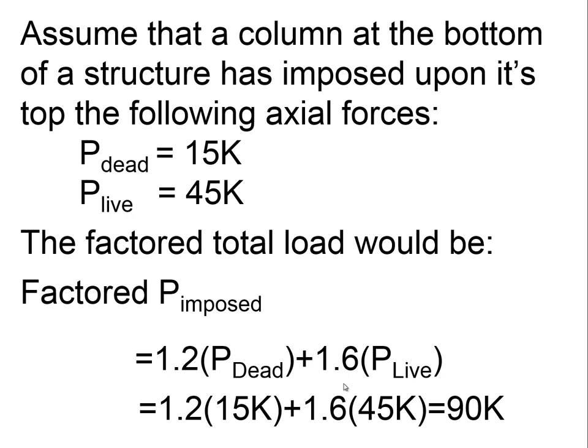We're going to assume that a column at the bottom of the structure has imposed upon its top the following axial forces: P dead of 15 kips, P live of 45 kips. The factored total load is P factored imposed equals 1.2 times P dead plus 1.6 times P live. Since P dead is 15 kips, 1.2 gets multiplied by 15 kips. P live is 45, so 1.6 gets multiplied by 45 kips, and we end up with 90 kips total.